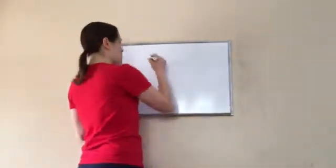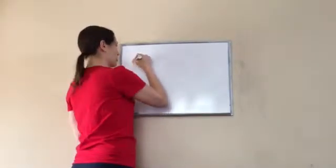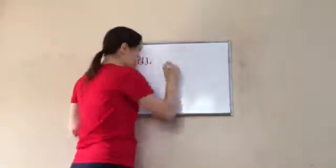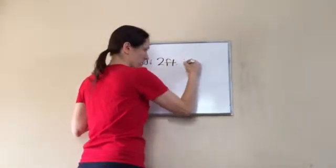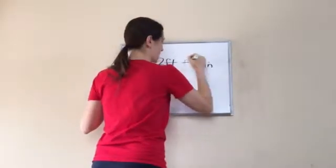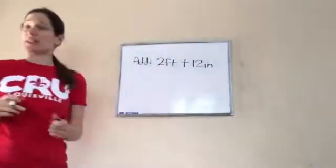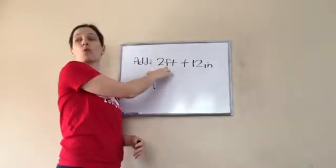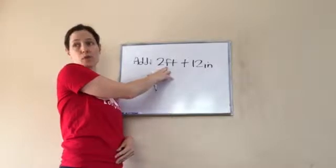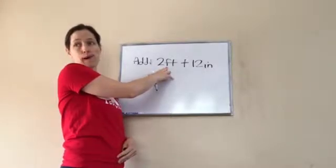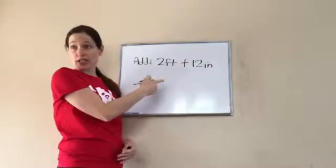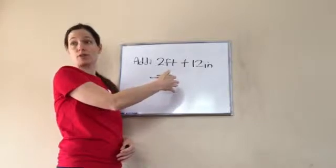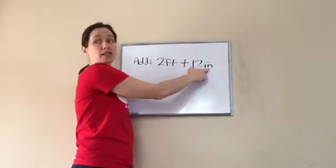What I mean by that is they tell you to add 2 feet plus 12 inches. Now they want us to put this into inches, the total amount. So how much is in one foot? How many inches are in one foot? Twelve. Okay, and so this is 2 foot.